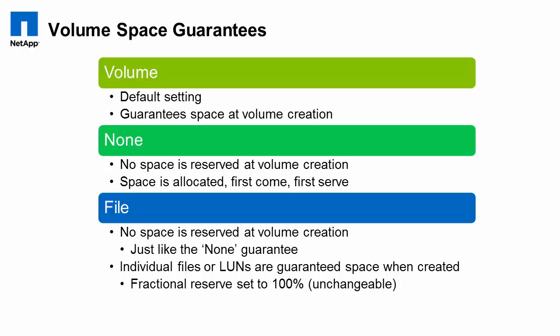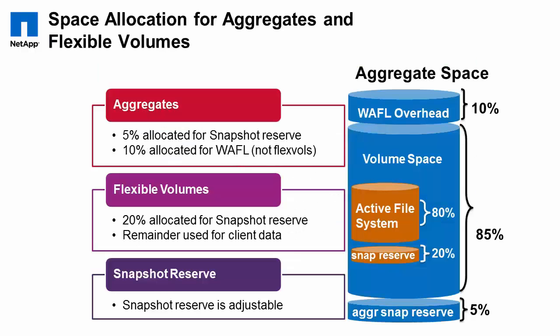When you are in the none configuration, space is allocated on a first-come, first-served basis. For example, you can have 10 16-terabyte volumes in a single 16-terabyte aggregate. The first volume to need physical blocks in the aggregate is the first one to get those physical blocks. Any other volumes, if there is no space in the aggregate to satisfy those requests, will suffer the consequences, which we'll talk about later on. The third option is the file option, which does not guarantee the volume in the aggregate, but any files that support space reservations within the volume are guaranteed within the aggregate. A LUN is one of those special files.